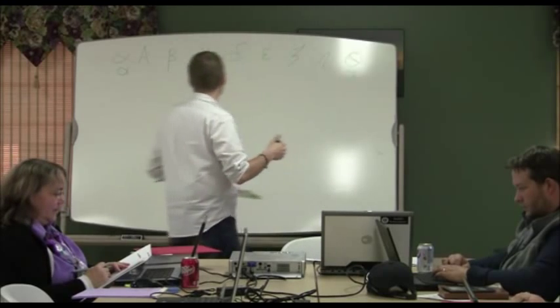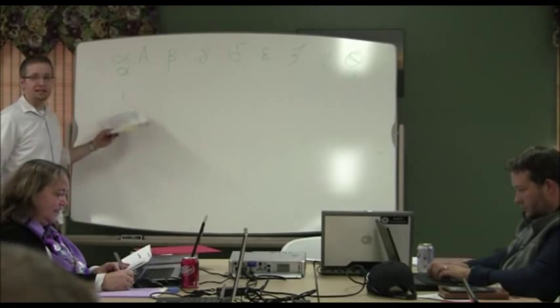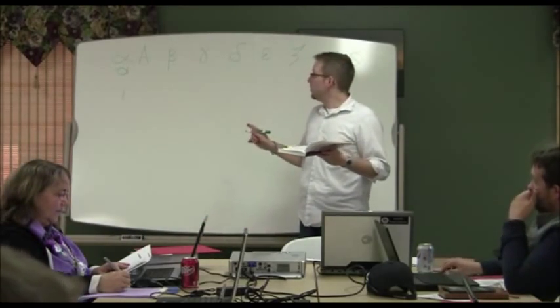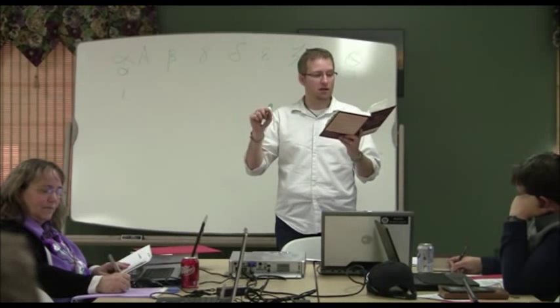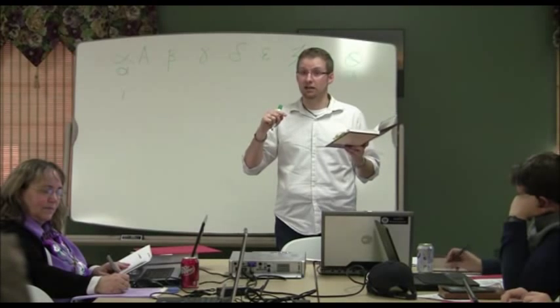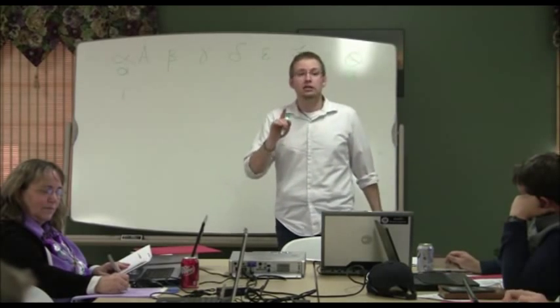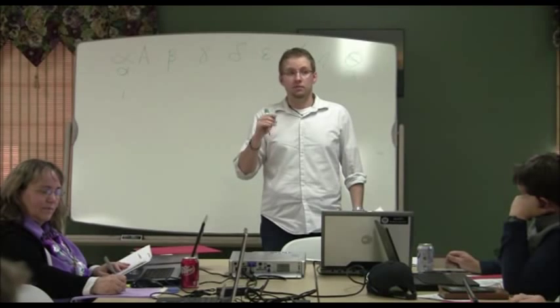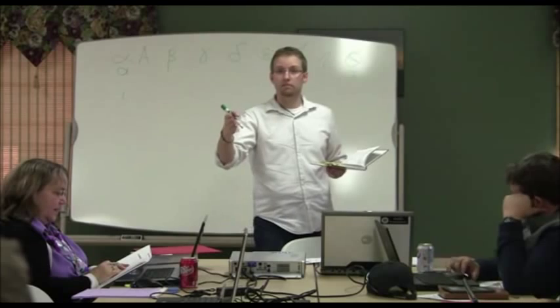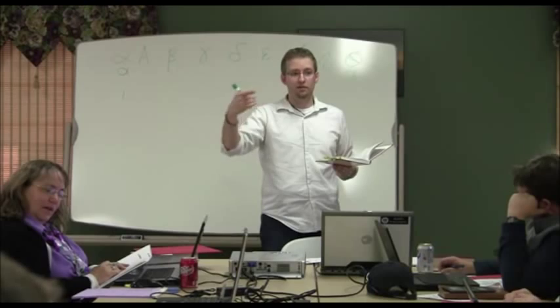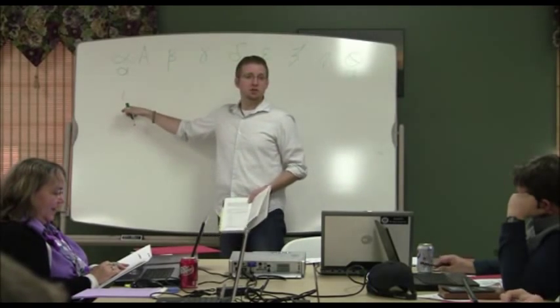Have you ever heard the phrase 'not one iota will pass'? This next letter is iota. It's one of the smaller letters and it looks basically like an i without the dot. This one has two pronunciations — it can be long or short: either E or I. Like 'pit' for the short I, or 'machine' for the long E sound. Generally when you're reading, iota is going to be pronounced as a short I.